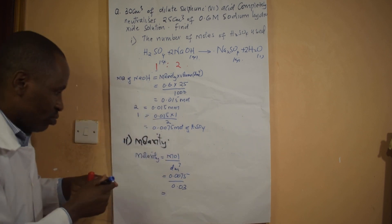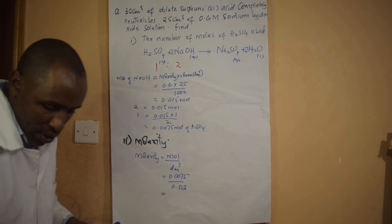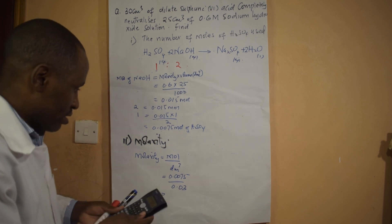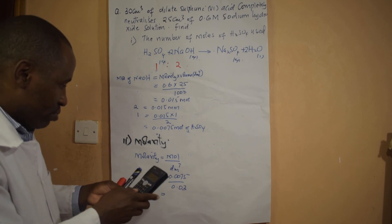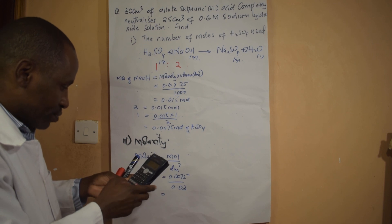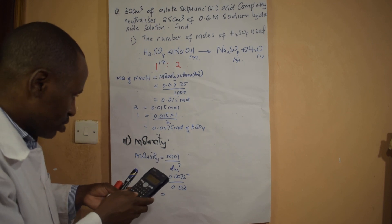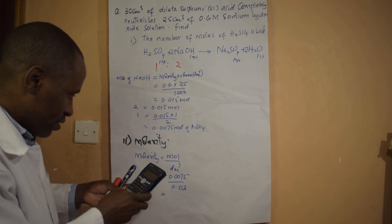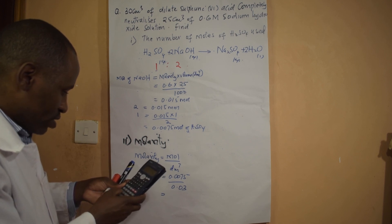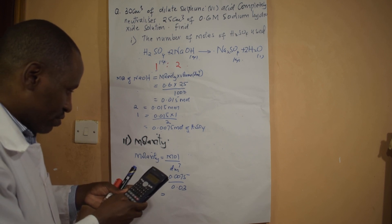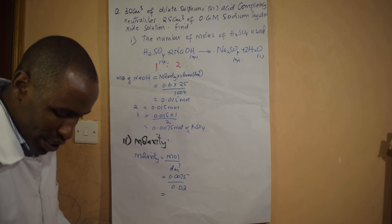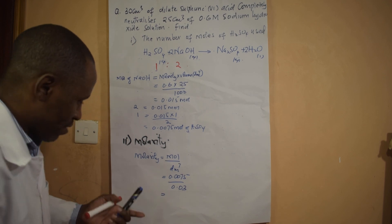Once you work it out, you get your molarity: 0.0075 divided by 0.03 gives you 0.25 molar for sulfuric acid.